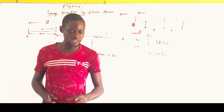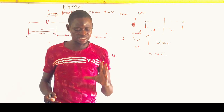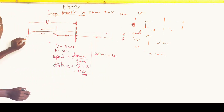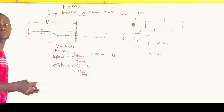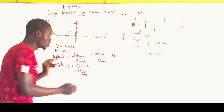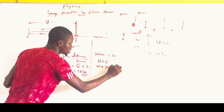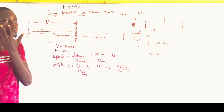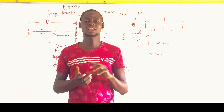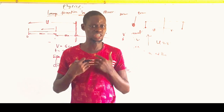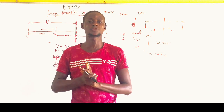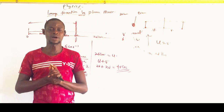The question asks for the distance separating the object and the image after 2 seconds. The object is on one side of the mirror and the image is on the other side. The separating distance equals U plus V, which is 20 plus 20, giving 40 cm. So the distance separating the object from the image is 40 cm. If you have any questions or past questions that are confusing you, drop a comment and I will solve them for you. Thank you for watching — please subscribe, like, and share the video with your friends so they can also pass their exam.